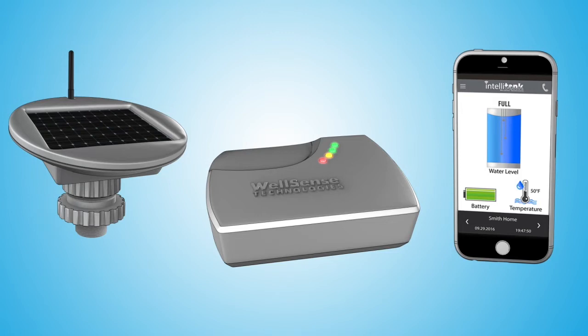The IntelliTank system consists of three main components: the remote sensor module unit, the home unit, and our smartphone app.